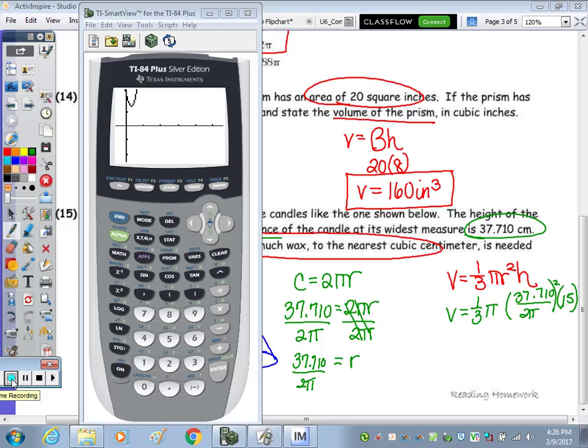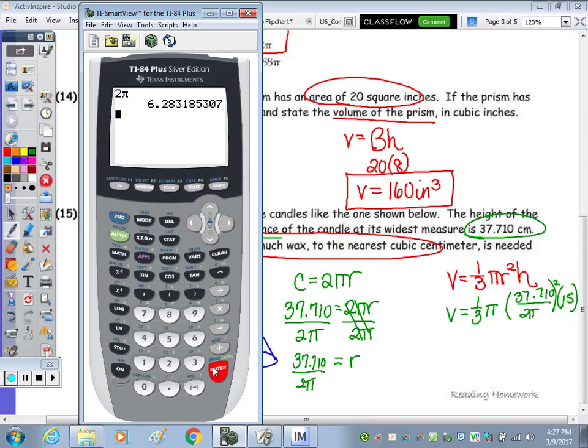Moving to the calculator, I'm going to do 2 pi first, get that answer, and then 37.710 divided by the answer above to keep it exact. Now I need to square that, and then times a third, times pi, times 15. And we end up with 565.813. It wants it to the nearest cubic centimeter. So since to the right of the 5 is an 8, it's going to round to 566 cubic centimeters.